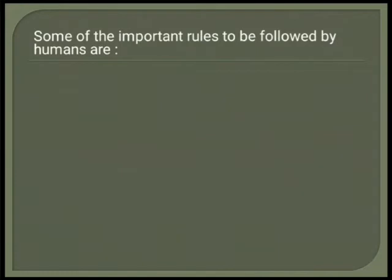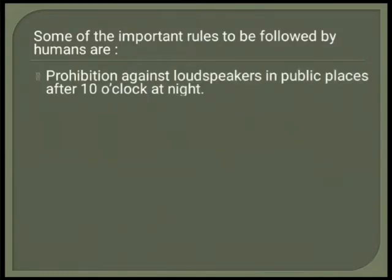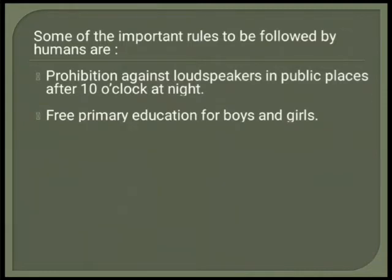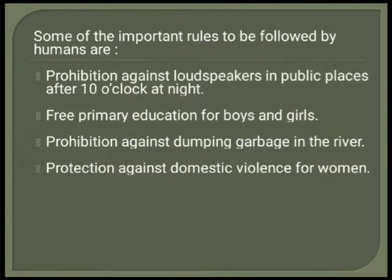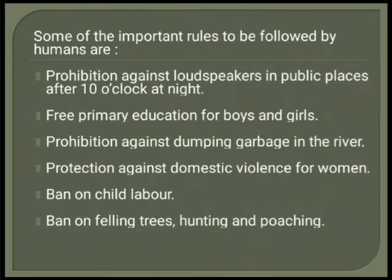Some of the important rules to be followed by humans are: 1. Prohibition against loudspeakers in public places after 10 o'clock at night. 2. Free primary education for boys and girls. 3. Prohibition against dumping garbage in the river. 4. Protection against domestic violence for women. 5. Ban on child labor. 6. Ban on felling trees, hunting and poaching.